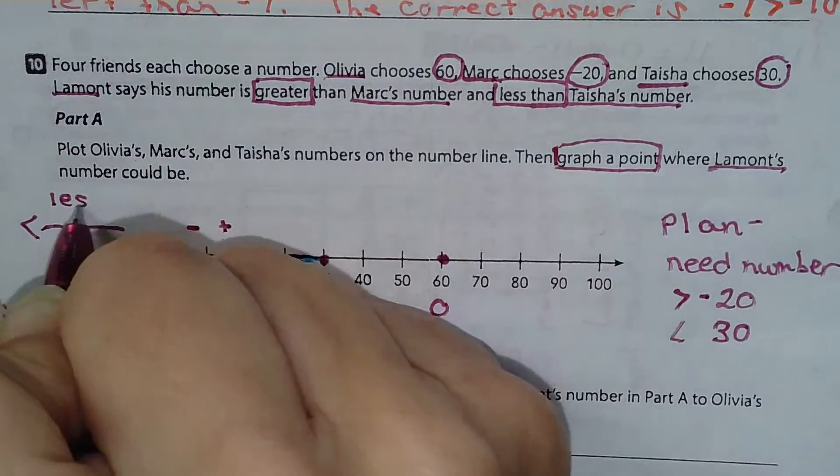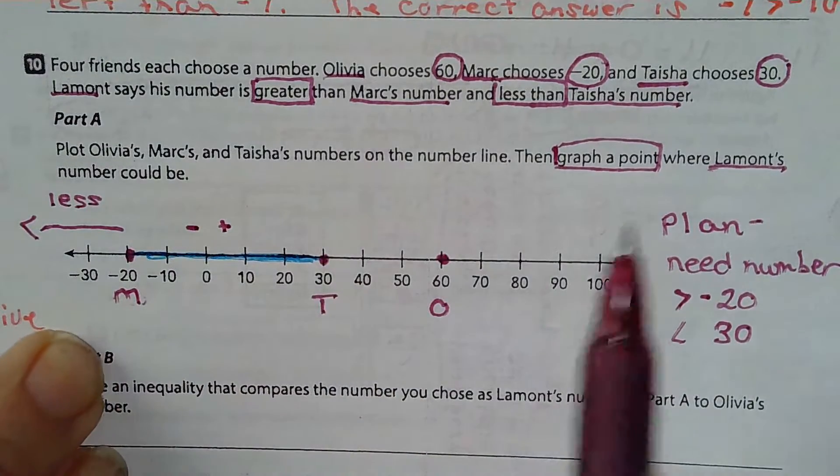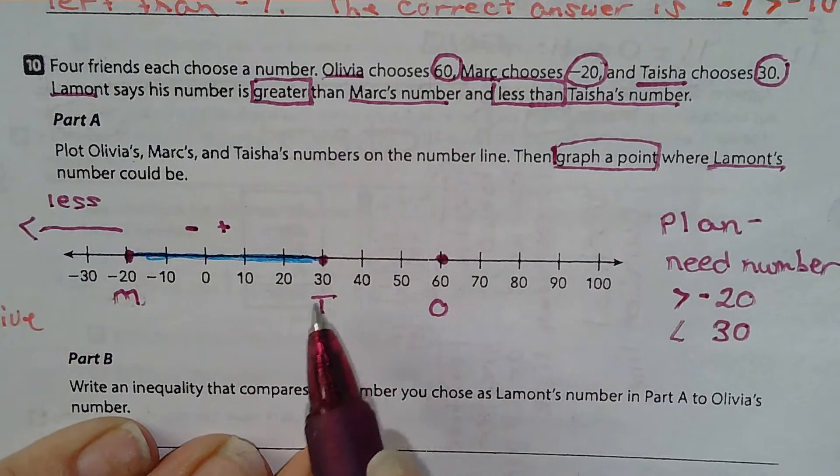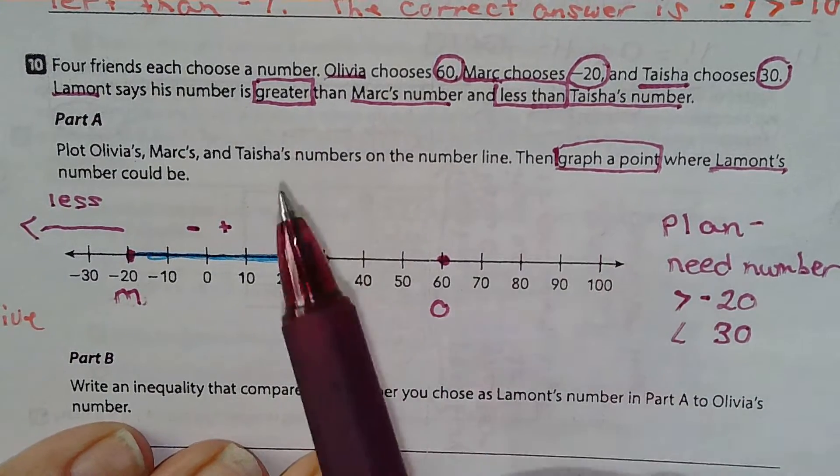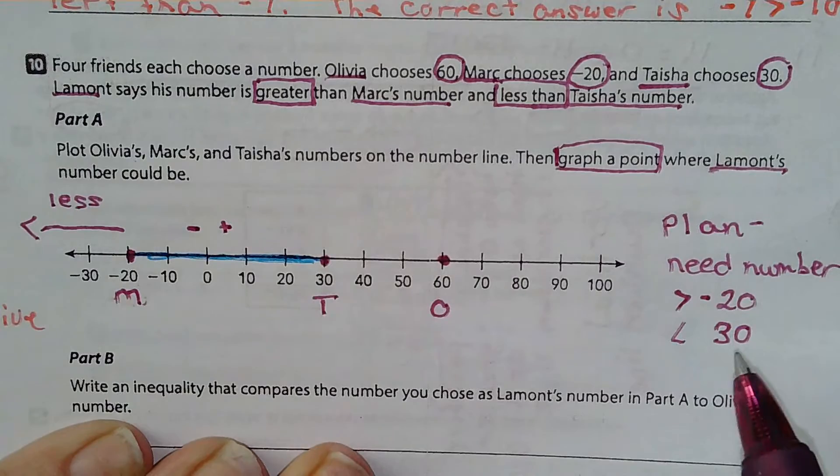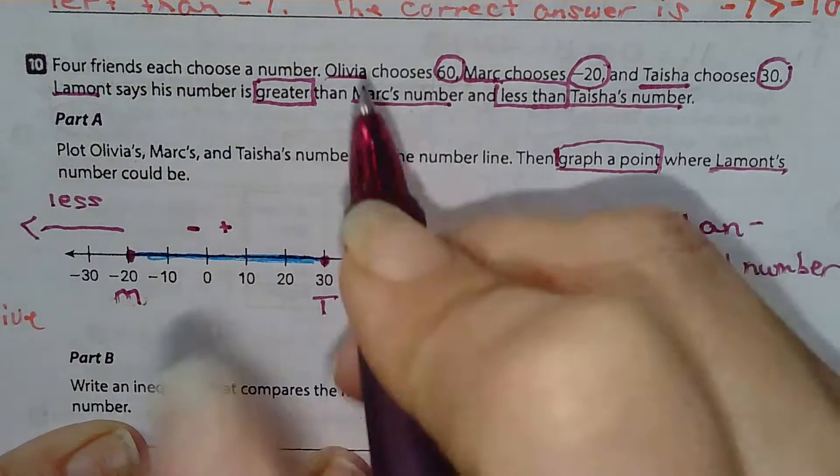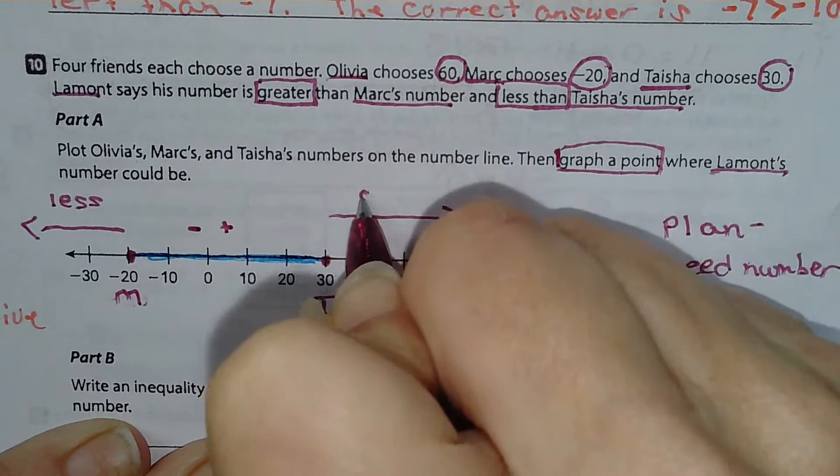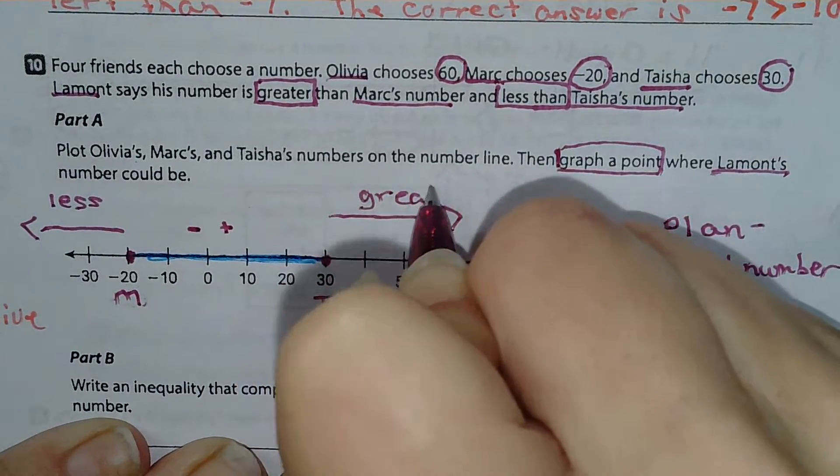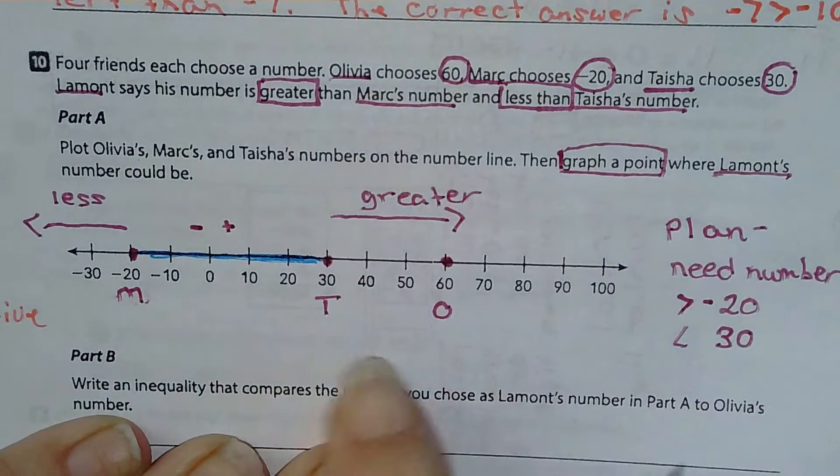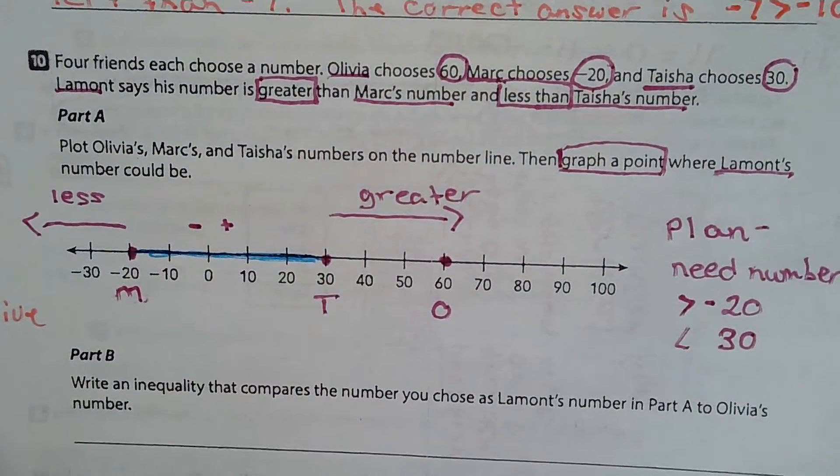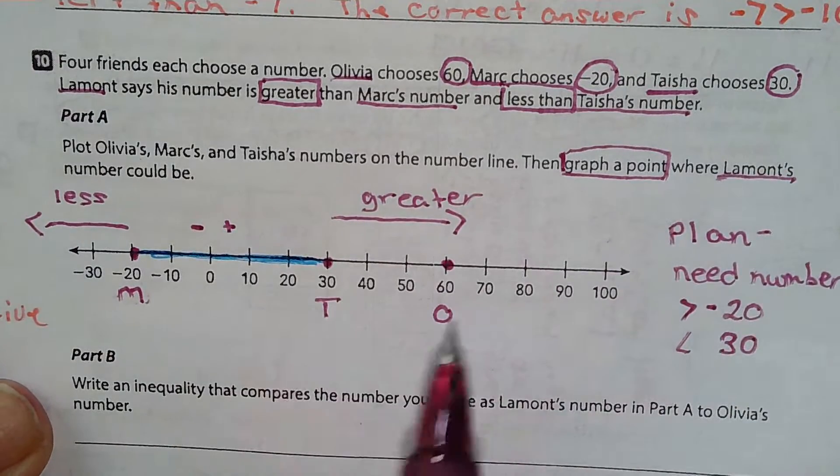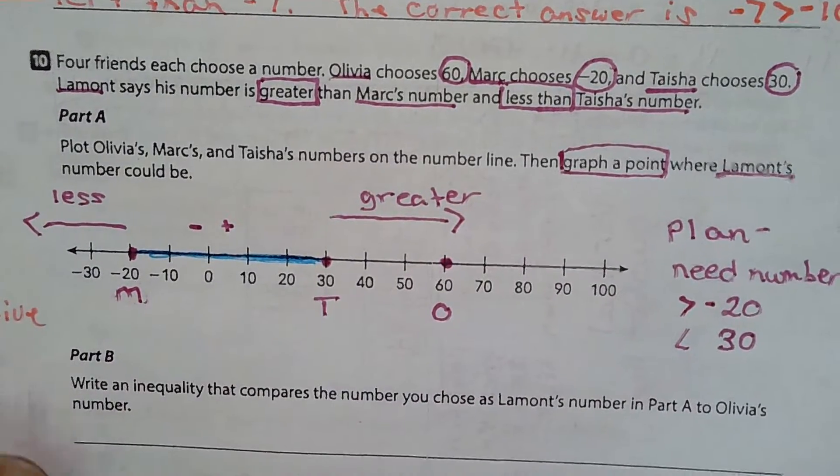So I'm not looking for a number less than Mark's, right? But I also cannot have anything greater than 30. So my number can be between these two places. I graphed it and I also marked where it could be.